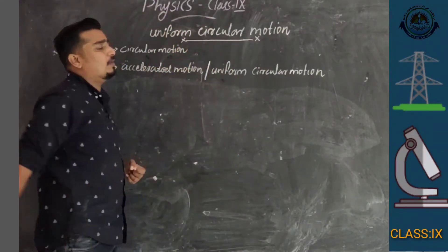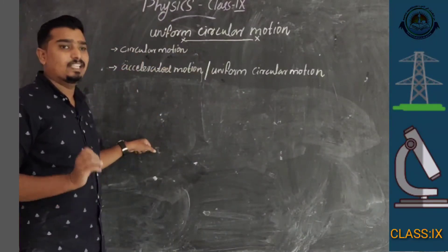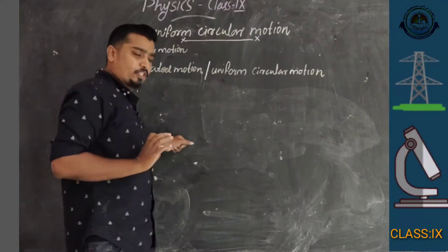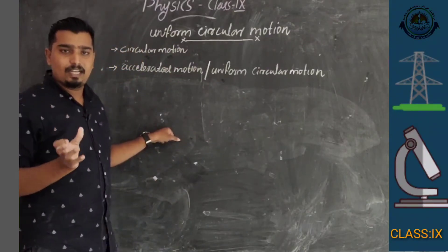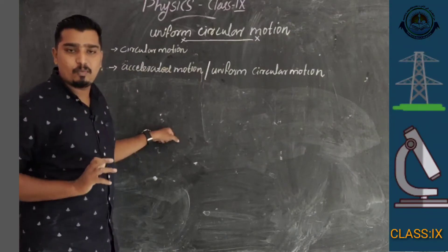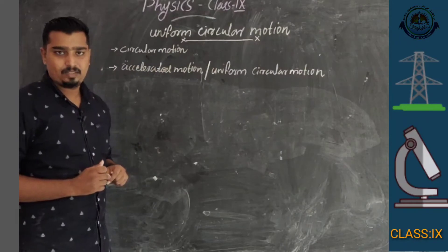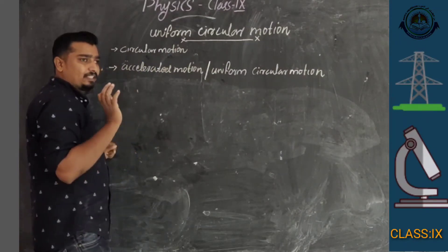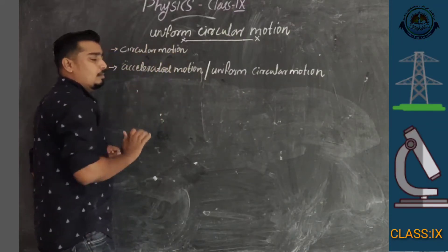Before explaining uniform circular motion, what is circular motion? Circular motion means if an object is moving along a circular path, that type of motion is called circular motion.